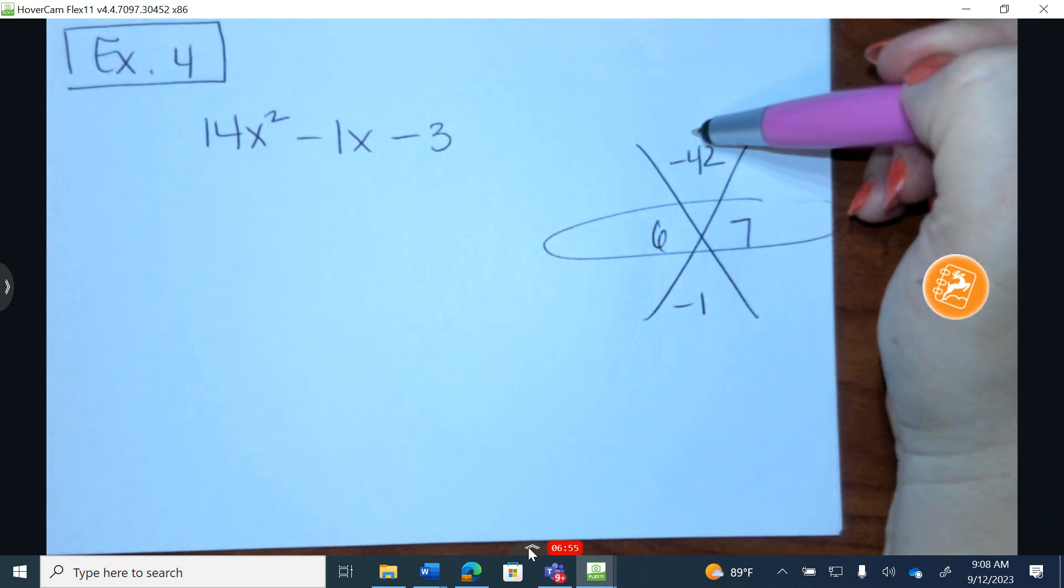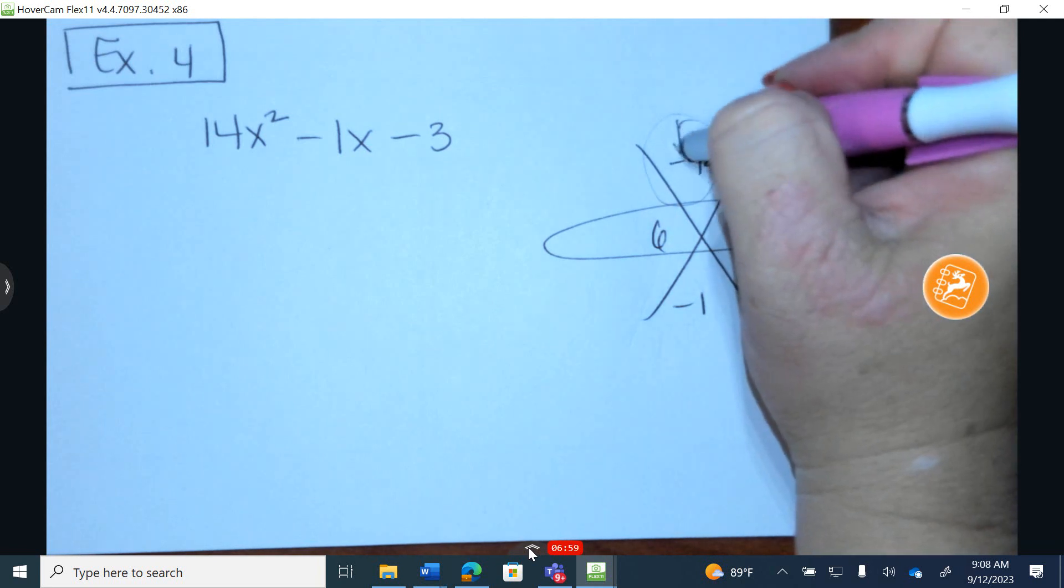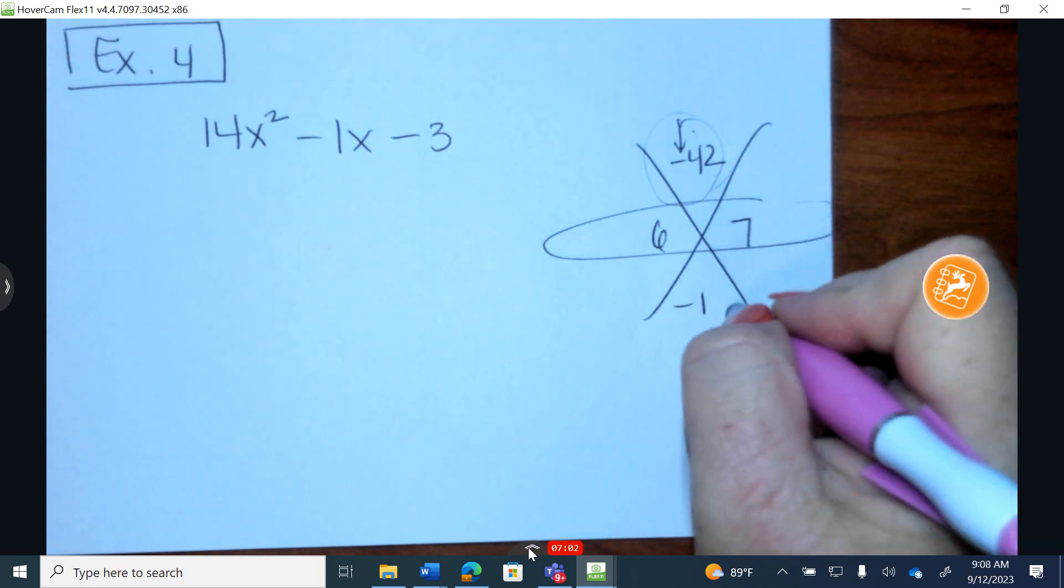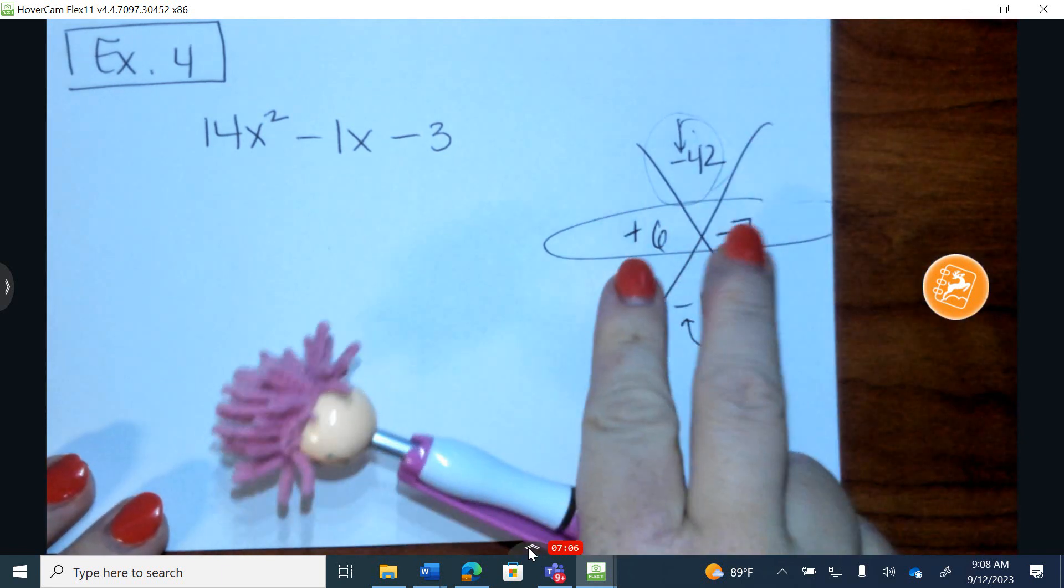When there's a negative up front and we produce this number by multiplying, it means it has to be different signs. So these are going to be different signs. One's positive and one's negative. The larger number has to be negative. Let's confirm.